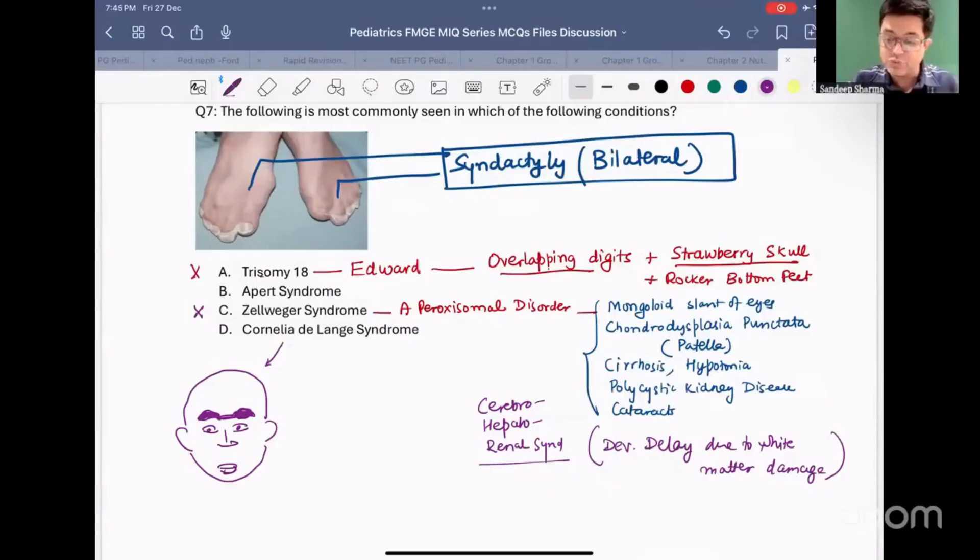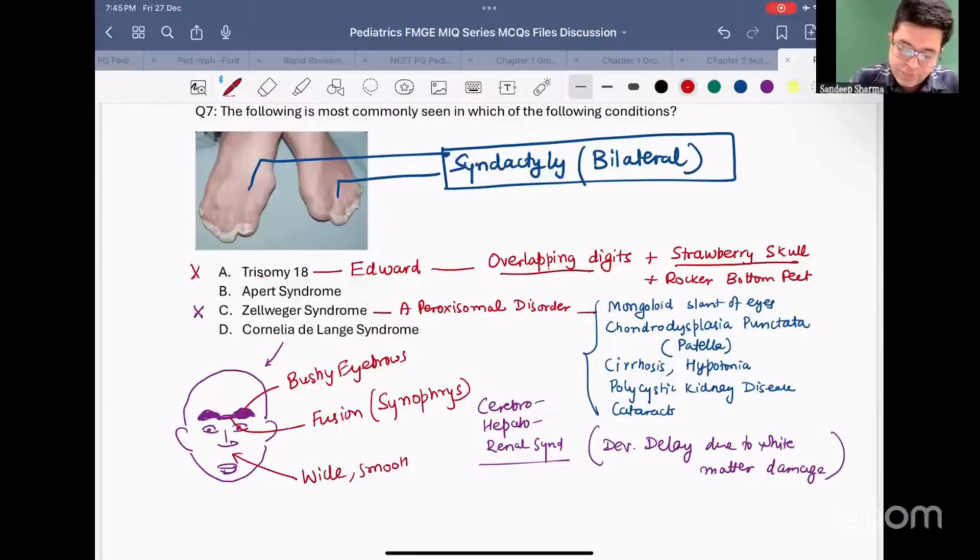What are the abnormalities you can see? There is fusion of, there is bushy eyebrows. They have bushy eyebrows. Number one. Second, there will be fusion of the eyebrows in the center. We call it as Synophrys. And third, they will have wide smooth philtrum. If you have this kind of face, the patient is likely having Cornelia de Lange syndrome.